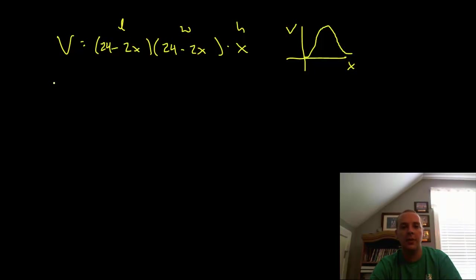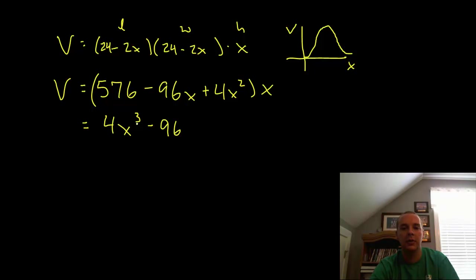Let's rewrite V real quick. You have 24 times 24, that would be 576, and then you have minus 48x minus another 48x, that would be minus 96x, and then negative 2 times negative 2 makes plus 4x squared. And all those that we foiled is still times x. So distributing the x and maybe rearranging some terms, you have 4x cubed minus 96x squared plus 576x.